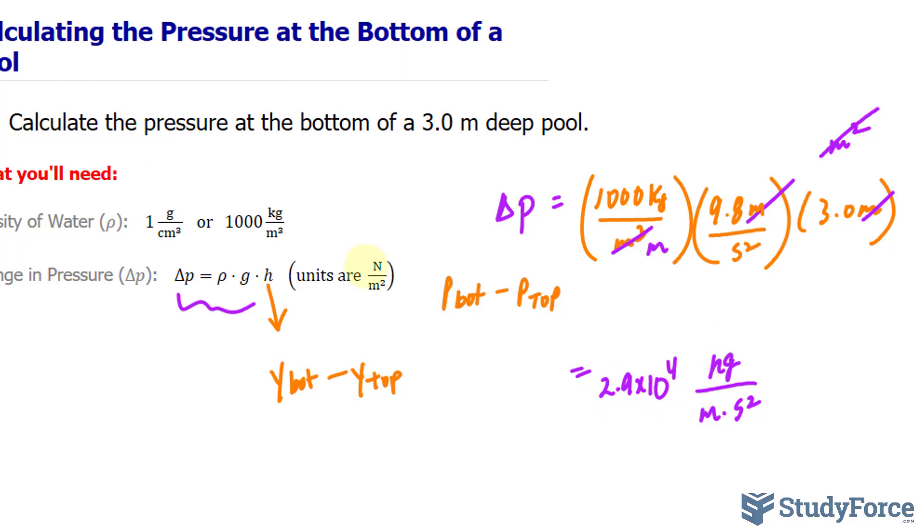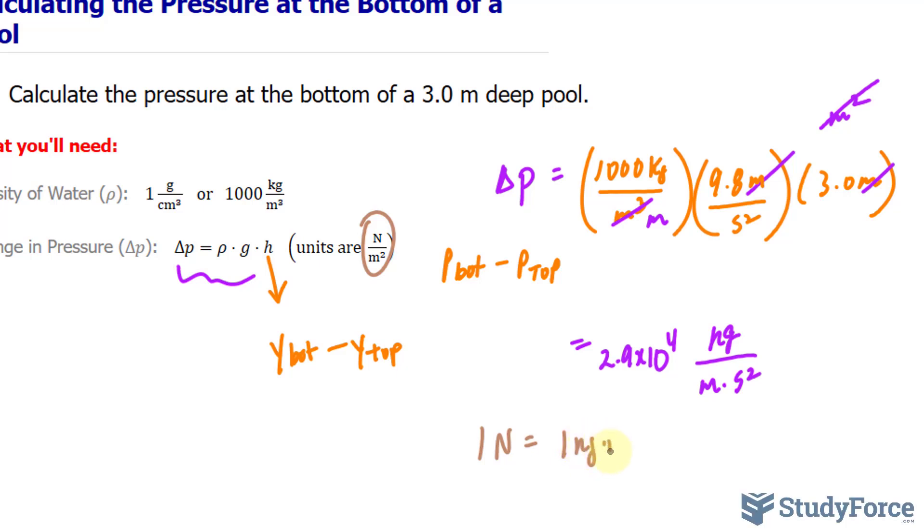Now remember, the units for pressure are newtons per meter squared. 1 newton per meter squared is equal to 1 pascal, and it can be converted into atmospheres if you like. Also recall that 1 newton is 1 kilogram times meters per second squared.